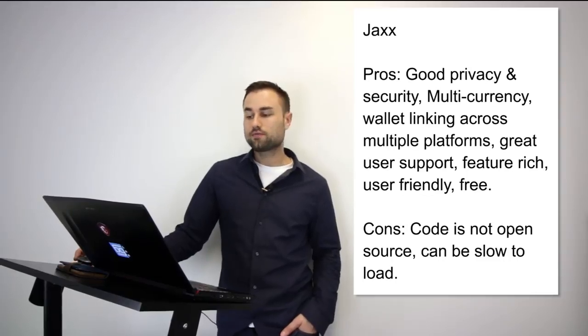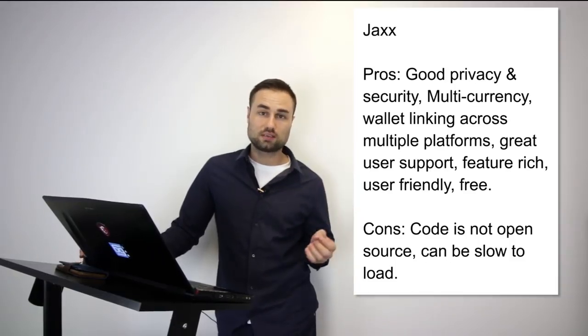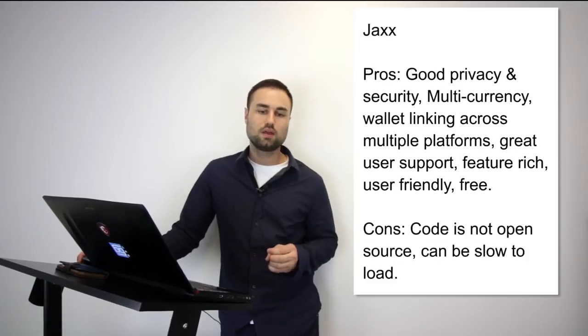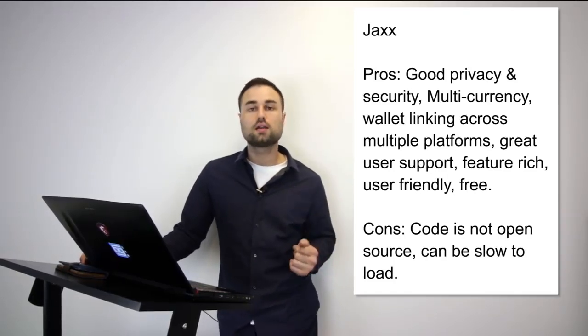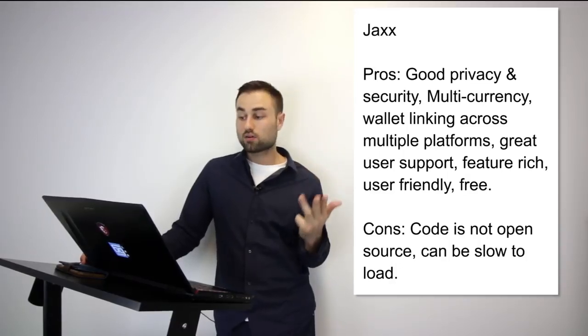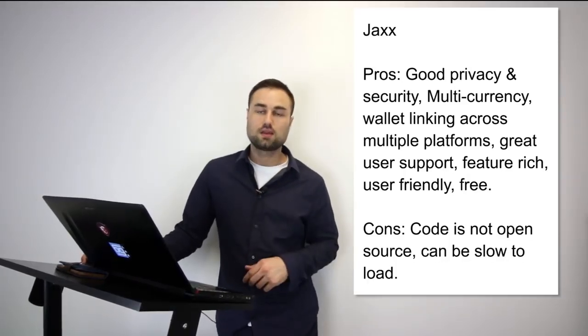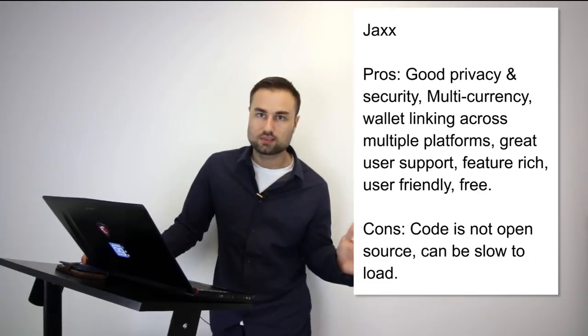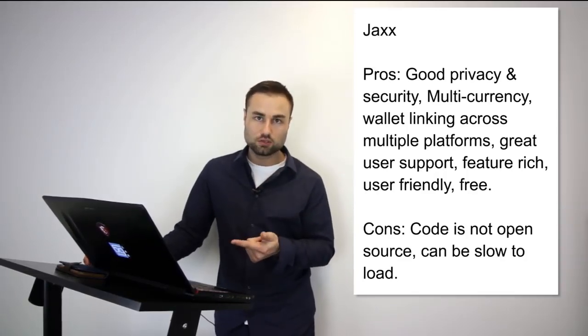Next is Jaxx — another mobile wallet. It supports multiple currencies such as Ether, Ethereum Classic, Dash, Litecoin, Bitcoin, and many more. The UX design is one of the best — very intuitive, so when you log in you know exactly what's going on. Pros: good privacy and security, multi-currency, links across multiple platforms so your desktop and iPad sync together, and user-friendly. Cons: it's not open source and can be really slow. Jaxx is my go-to multi-currency wallet for day-to-day transactions.